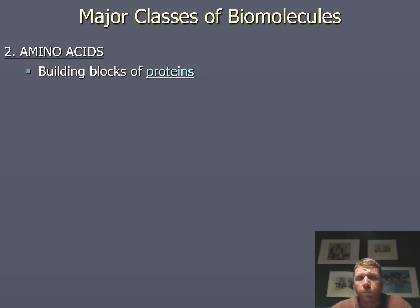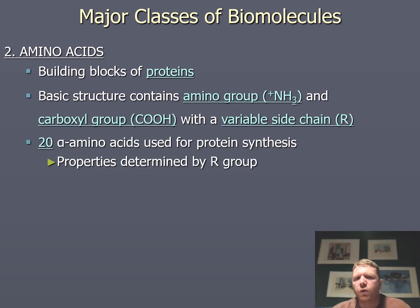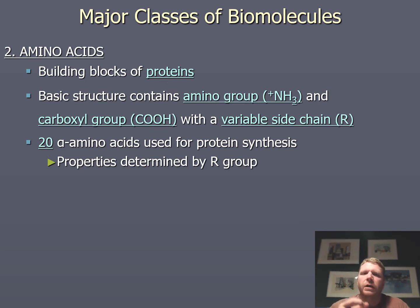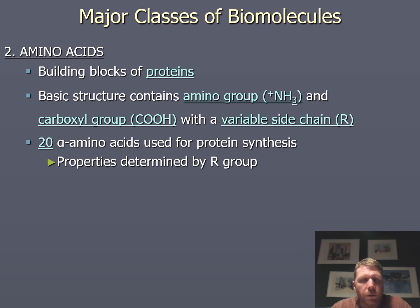The next major class of biomolecules is amino acids — the building blocks for proteins. The basic structure contains an amino group and a carboxyl group with a variable side chain. There are 20 proteinogenic amino acids. The word 'proteinogenic' means 'protein-making' — these are the amino acids involved in protein synthesis. There are also amino acids not integrated into proteins, which are non-proteinogenic. The properties of each amino acid are dictated by its different R groups, which we'll get into later.